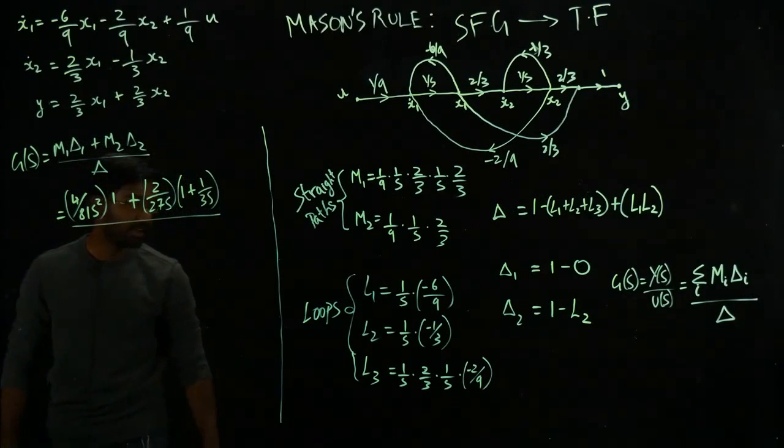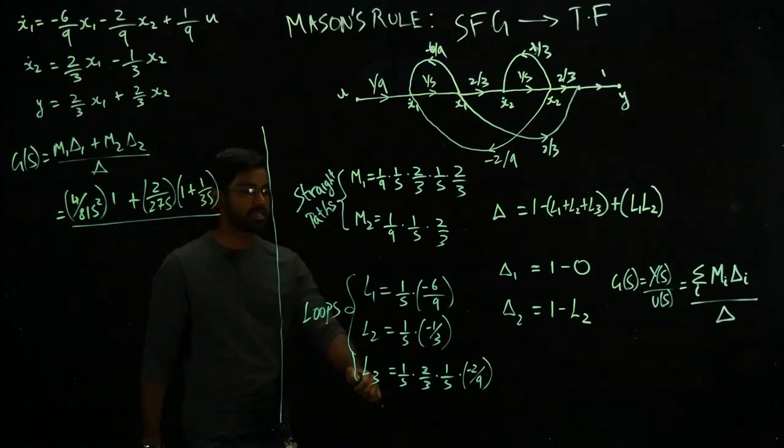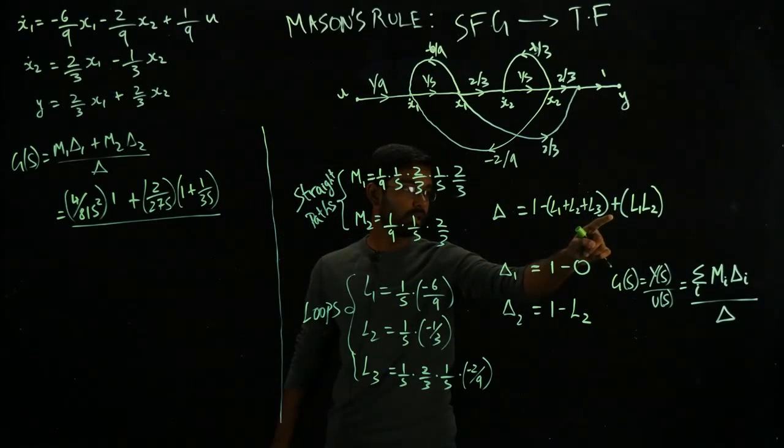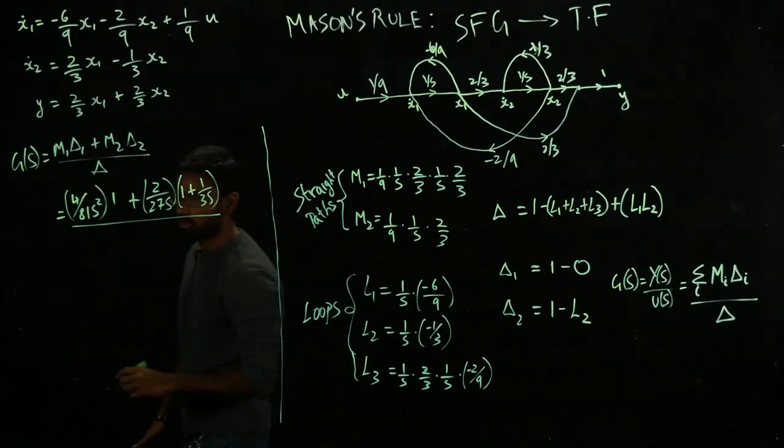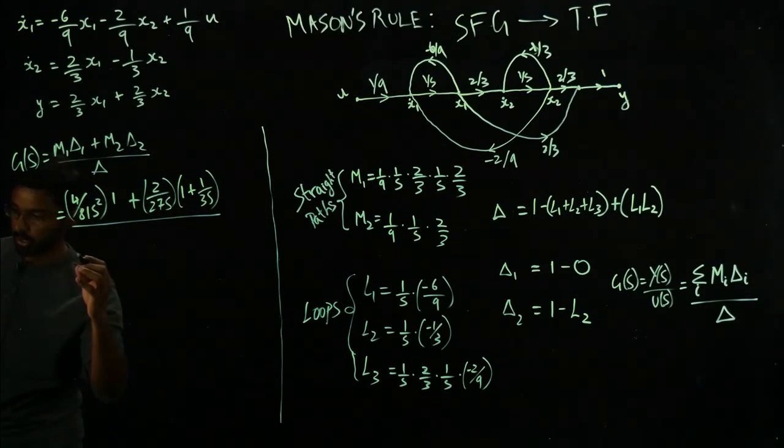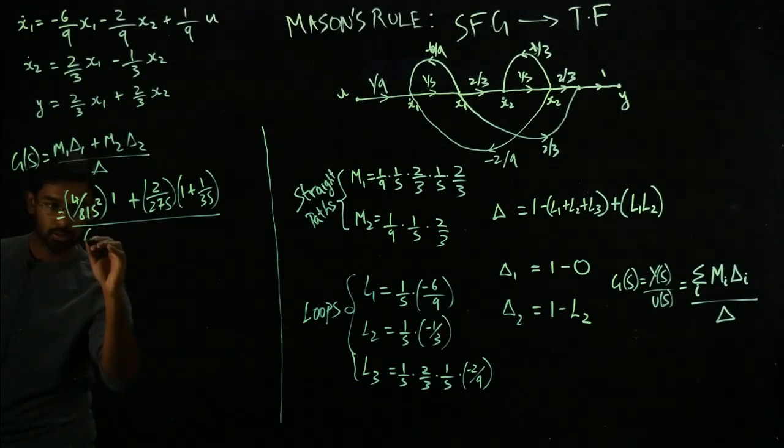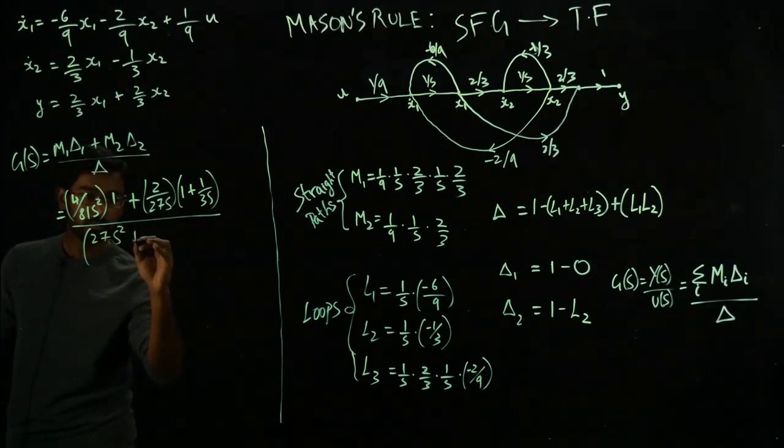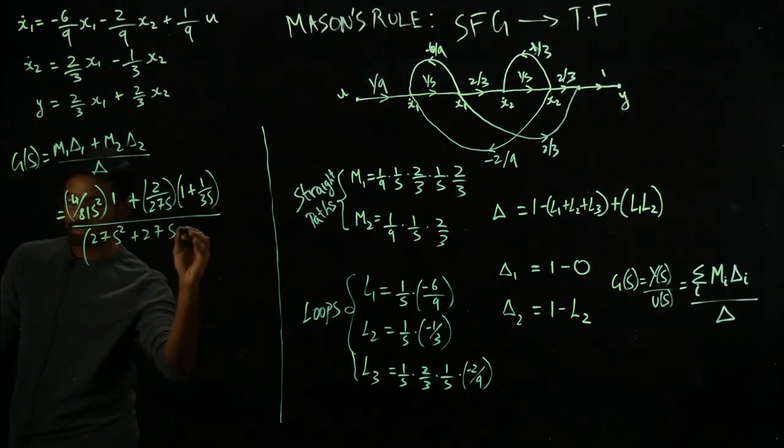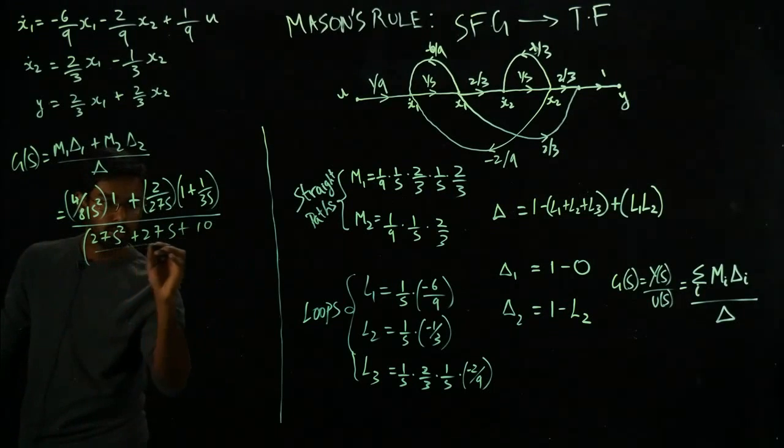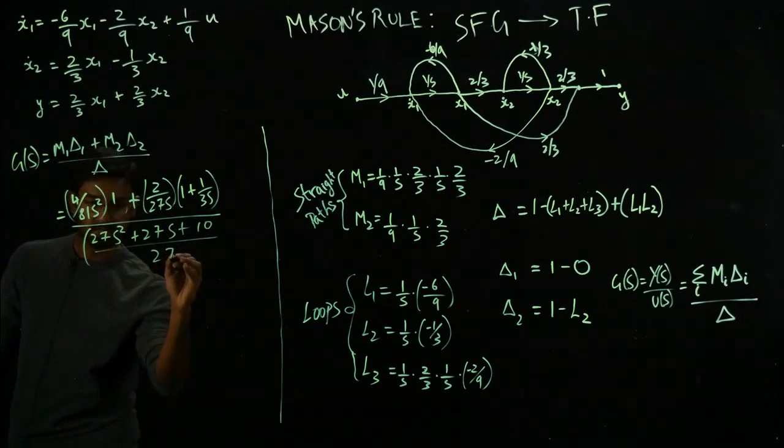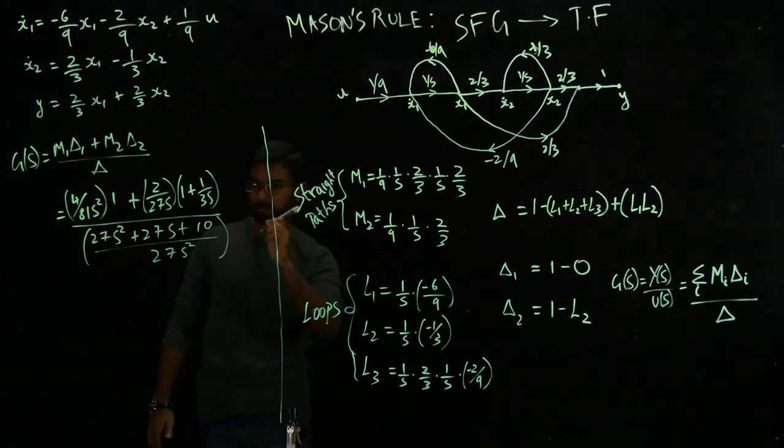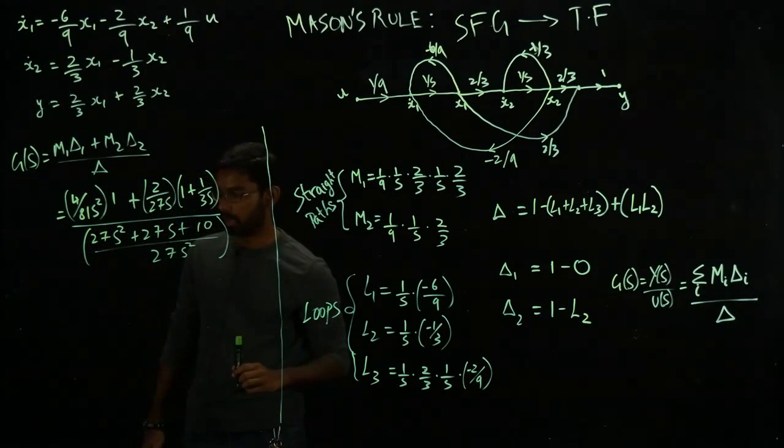The whole thing divided by del. So what is my del? I have to add these three guys together and then plus L1 plus L2. A bit of algebra will tell you the total del amounts to this: 27 s squared plus 27 s plus 10 over 27 s squared. I know I'm skipping a bit of algebra and being lazy and copying it from my notes, but obviously I'm sure you guys will be able to do this.